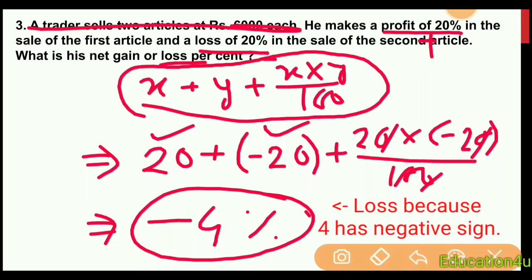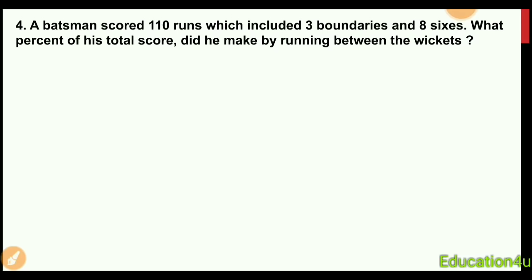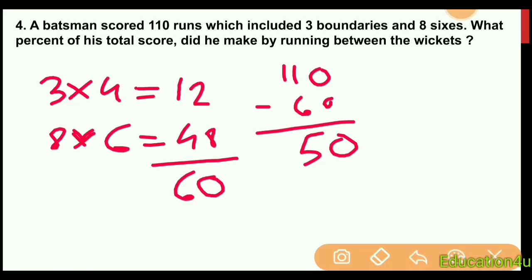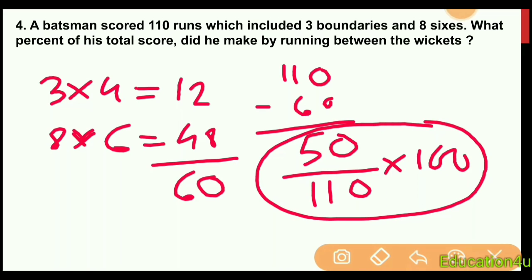Next question: A batsman scored 110 runs which include three boundaries and eight sixes. What percent of his total score did he make by running between the wickets? Three boundaries equals 12 runs, eight sixes equals 48 runs. Total from boundaries and sixes is 60. So running between wickets is 110 minus 60 equals 50 runs, divided by 110, multiplied by 100 for the percentage.